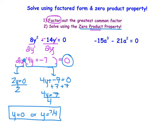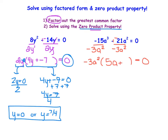Next example: I have -15a³ - 21a². Since they both contain a negative, I'll try factoring out a negative number. They're both divisible by negative 3, and they both contain at least two a's. So I'll use -3a² as my greatest common factor. Negative 15 over negative 3 is 5, and a³ over a² leaves a to the first. Plus negative 21 over negative 3 is 7, and the a squareds cancel. This is now rewritten in factored form.